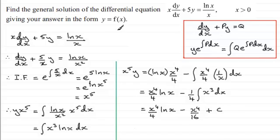Now we're asked to give the answer in the form y equals some function of x. So I need to divide both sides by x to the power 5. And if I do that, I'm just left with y equals ln(x) over 4x minus 1 over 16x plus c over x to the power 5. And there you have it.